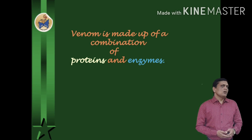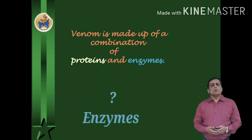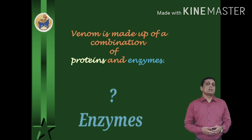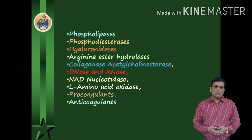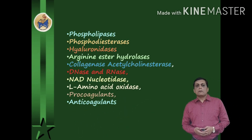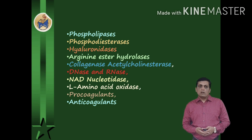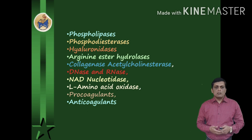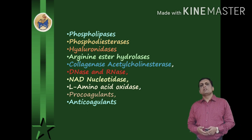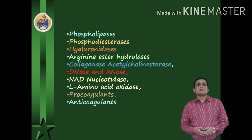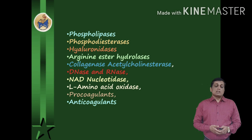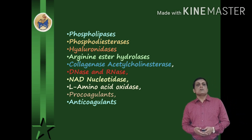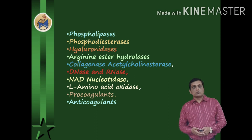Now let's know more details about the enzymes present in these venoms. Enzymes include Phospholipase A and D, which cause hemolysis by lysing the phospholipid cell membrane of RBCs. Phosphodiesterases interfere with the cardiovascular system, mainly to lower blood pressure.